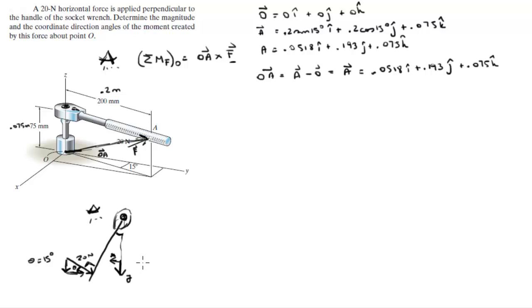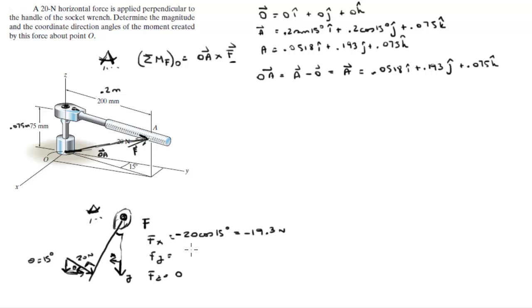The force has an x component, a y component, and a z component. Since the force is parallel to the x and y plane, the z component is 0. The x component is 20 cosine of 15 degrees, which is negative 19.3 Newtons (negative because it points toward the negative x axis). The y component is 20 sine of 15 degrees, which is 5.18 Newtons. So the Cartesian vector form of F is: −19.3i + 5.18j + 0k.